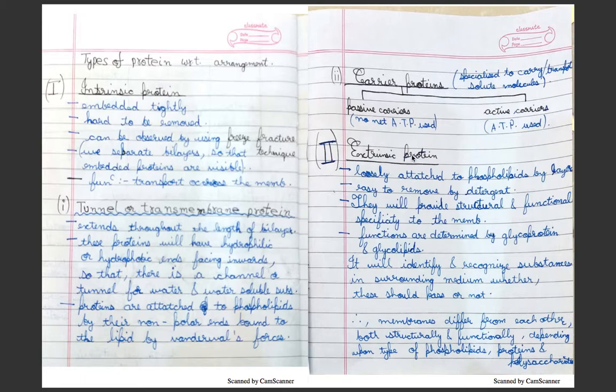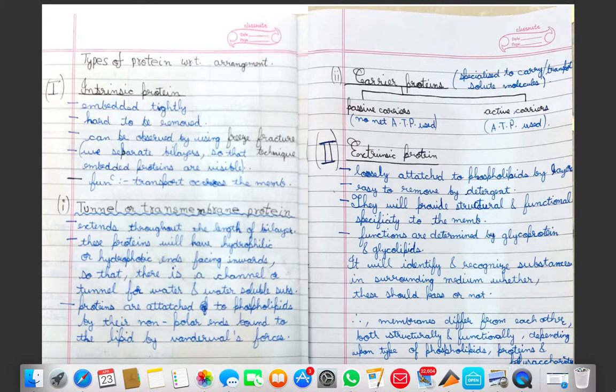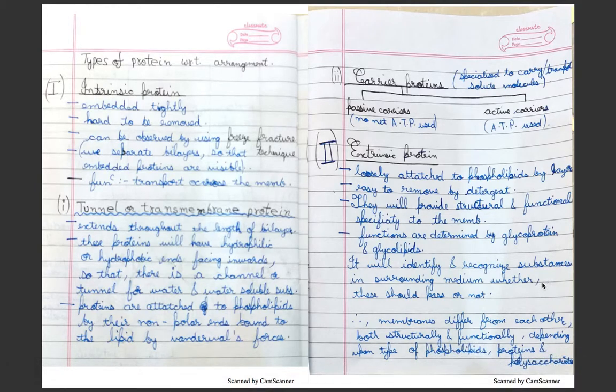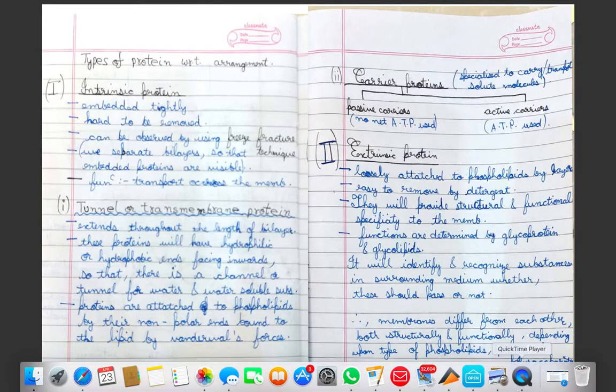Extrinsic protein is loosely attached to phospholipids bilayer, easy to remove by detergent. They provide structural and functional specificity to the membrane. Functions are determined by glycoprotein and glycolipids. They will identify and recognize substances in the medium, whether they should pass or not. Therefore, membranes differ from each other both structurally and functionally depending upon the type of phospholipids, proteins, and polysaccharides.